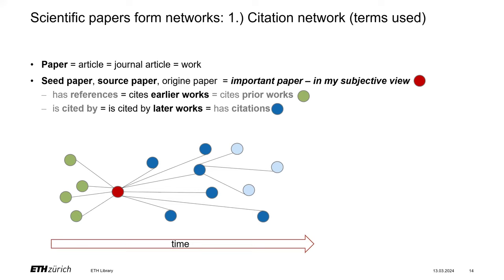In citation networks, scientific papers can also be called articles, journal articles, or works. To start your search in a tool that visualizes the citation network, you need to have already identified a paper that is important for your work. That choice is subjective. This paper is the starting point and can be called a seed paper or source paper, marked with a red dot.